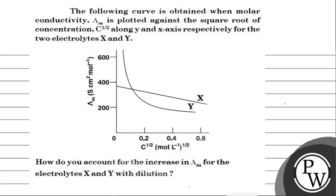Hello, so let's read this question. The following curve is obtained when molar conductivity lambda m is plotted against the square root of concentration C to the power half along y-axis and x-axis respectively for two electrolytes X and Y. How do you account for the increase in molar conductivity for the electrolytes X and Y with dilution?